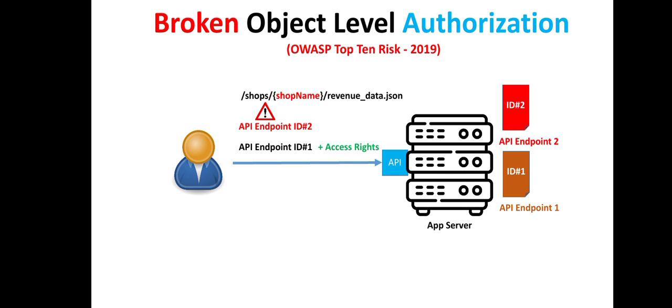What we can do is include an additional parameter of access rights. If a particular user has the access rights for an API endpoint, then they must be allowed access; otherwise, they should be denied.